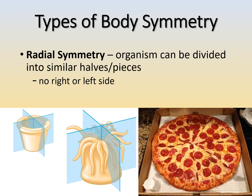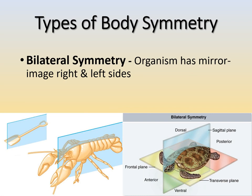With radial symmetry there's really no right or left side of the organism — you can't distinguish left from right if given just one piece. The second type is bilateral symmetry, where an organism has a right and left side that are mirror images of each other. This is more complex than radial symmetry. You can fold the organism in half and the two sides should be mirror images, but you can't cut it into more similar pieces.